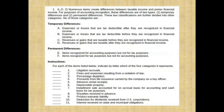The next question is a simulation. You have the definition of temporary differences and permanent differences, and items are given. Can you match the item with the topic? Numerous items create differences between taxable income and pre-tax financial income. For purposes of accounting recognition, these differences are two types — temporary and permanent — further divided into six categories: two types of permanent differences and four types of temporary differences covered in the prior lecture.